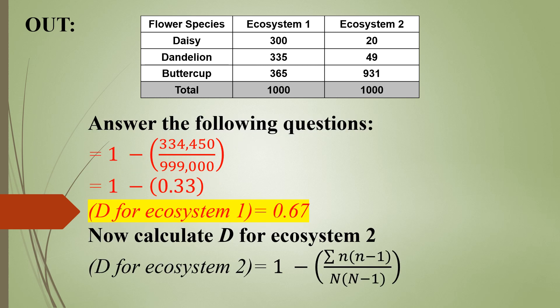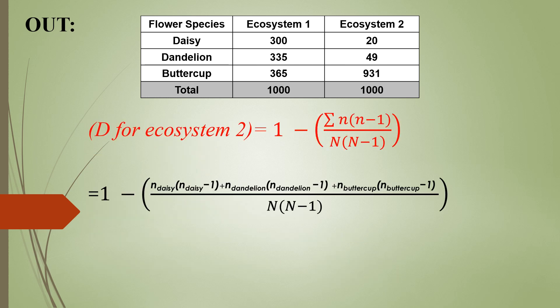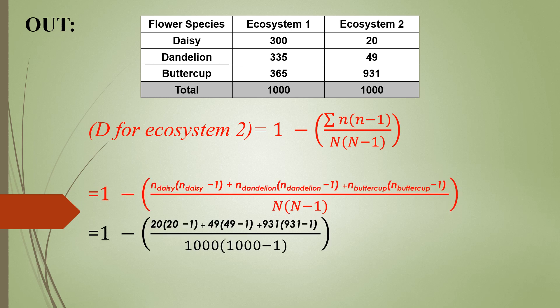The next step is to now calculate the diversity of Ecosystem 2 using the exact same equation. We will be setting up the Ecosystem 2 equation exactly the same way. So we have the number of daisies, number of dandelions, and number of buttercups. For Ecosystem 2, we had 20 daisies, 49 dandelions, and 931 buttercups. So we are replacing each one of those n's with those individuals of flowers for Ecosystem 2. Also, on the bottom, we had 1,000 total individuals in Ecosystem 2, so that's what we're replacing for our big N.